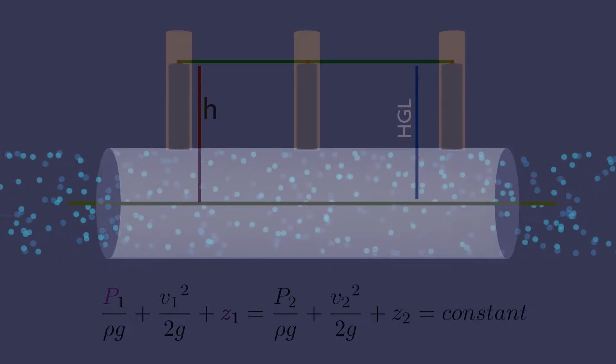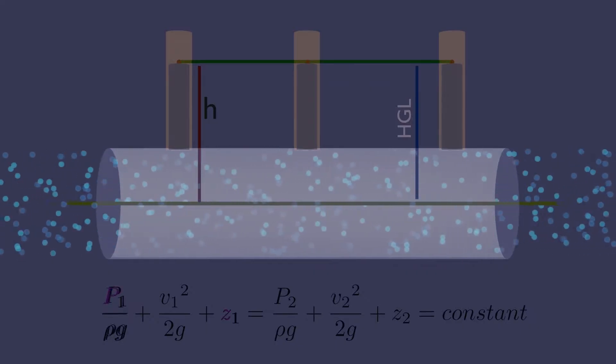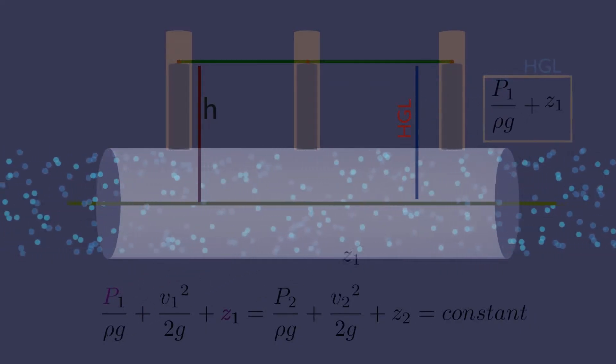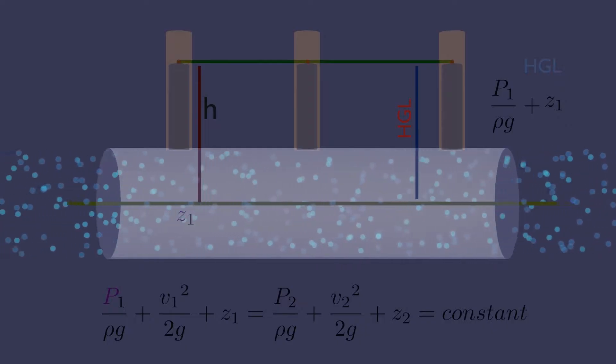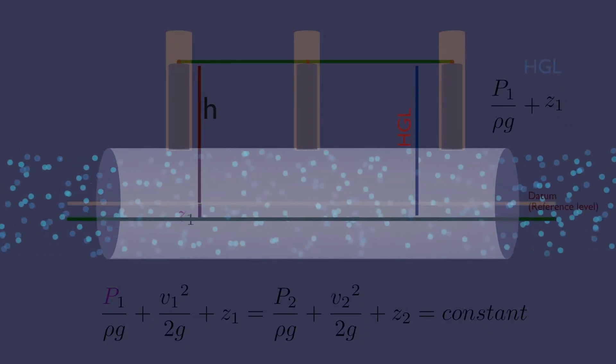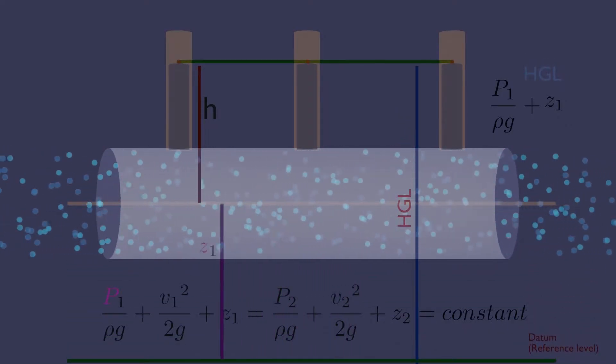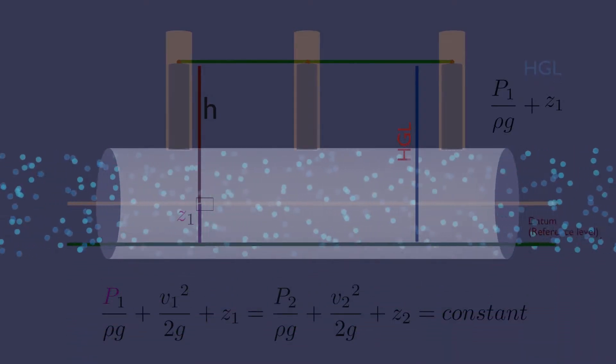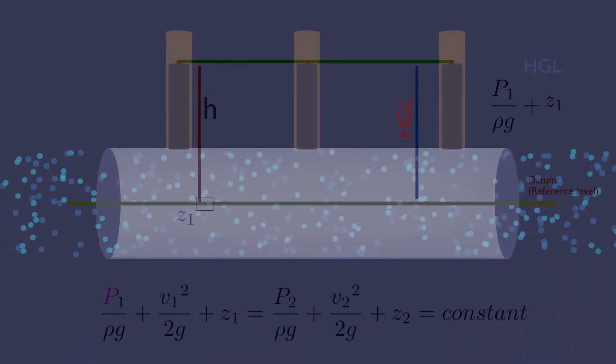Notice that hydraulic grade line represents the sum of static pressure and elevation heads. Elevation head depends upon the datum we choose. Here we choose the center of the pipe, but we can choose anywhere.